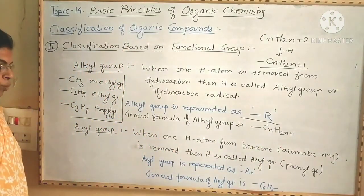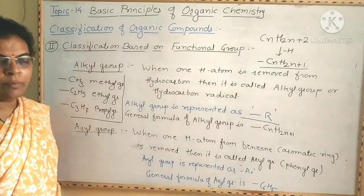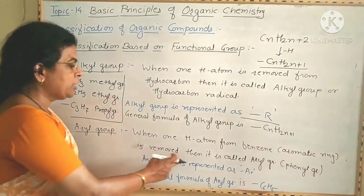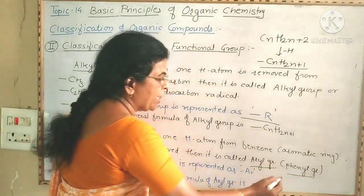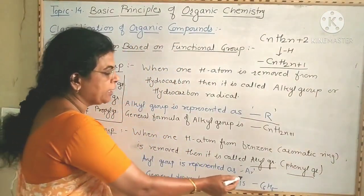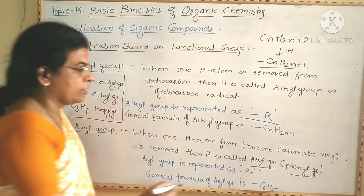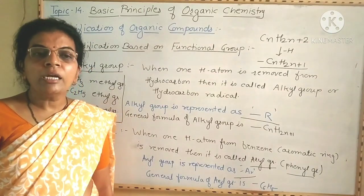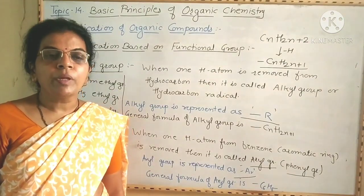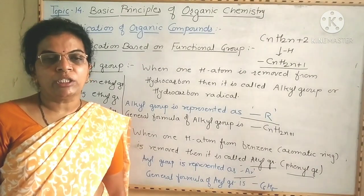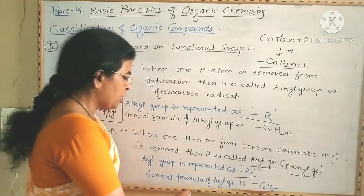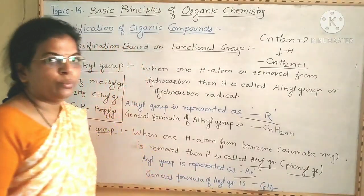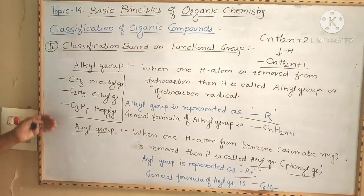Now we are going to see the aryl group. It is also a hydrocarbon radical. When one hydrogen atom is removed from benzene or an aromatic ring, it is called the aryl group, also named the phenyl group. The aryl group is represented as Ar. In benzene there are 6 carbon atoms and 6 hydrogen atoms, so the molecular formula of benzene is C6H6. When one hydrogen atom is removed, the general formula of the aryl group becomes C6H5, written as -C6H5.